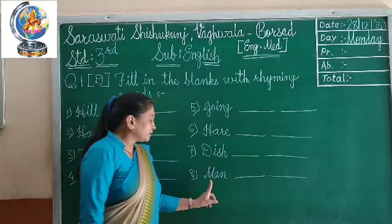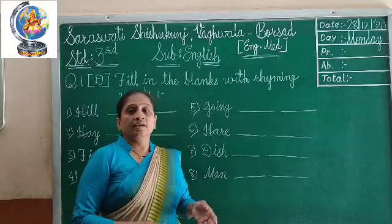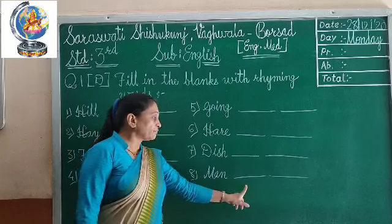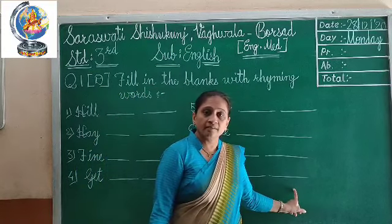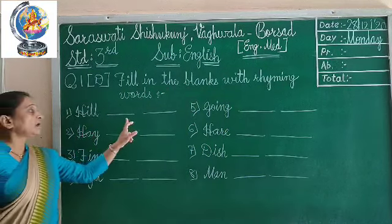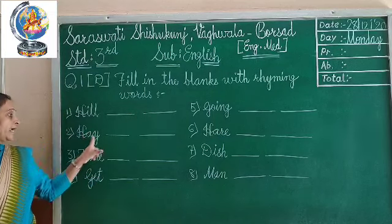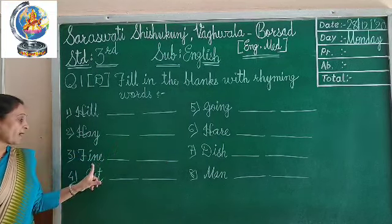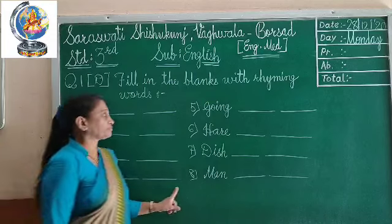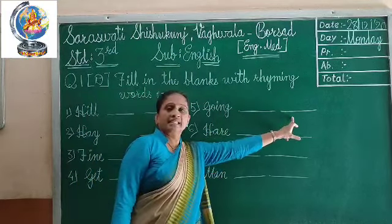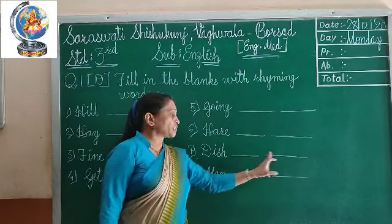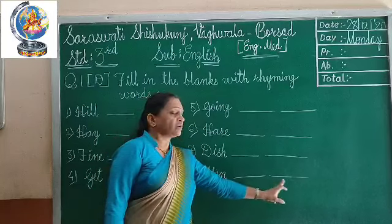Then for 'man,' the A-N letters will be the same, so you can write F-A-N — 'fan' — and R-A-M — 'ran.' To recap: hill — bill, fill; hay — day, say; fine — mine, nine; get — set; going — coming, saying; hare — dare, care; dish — fish, wish; man — ran, fan.